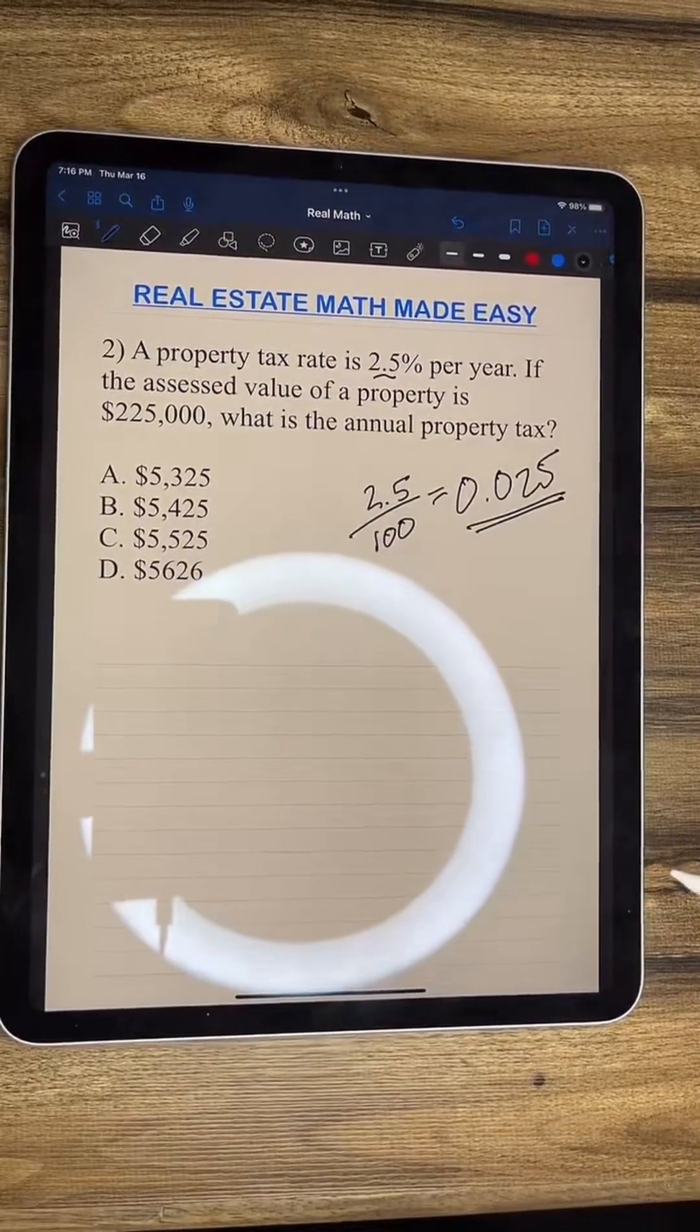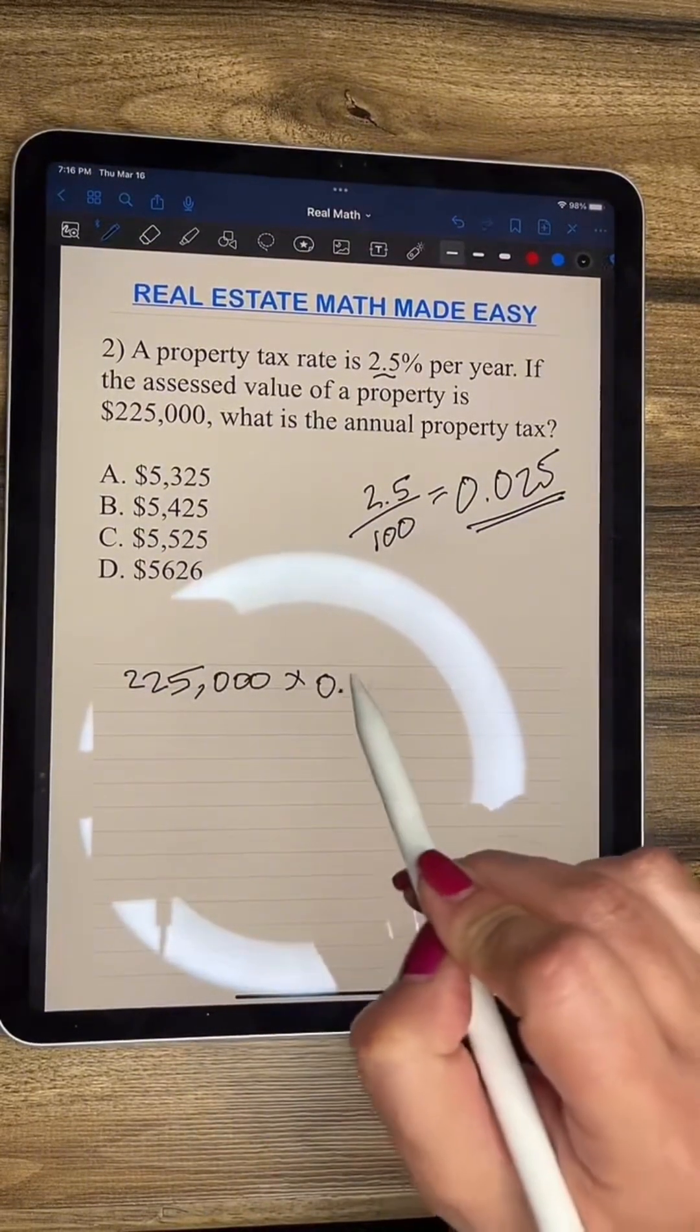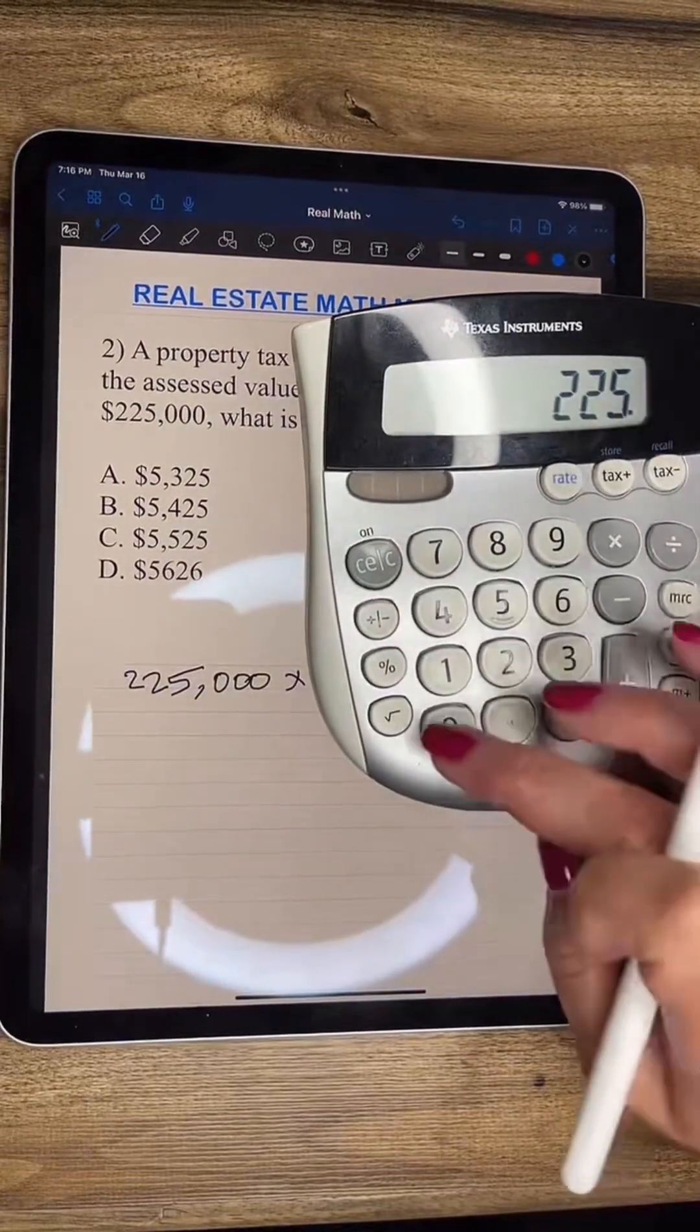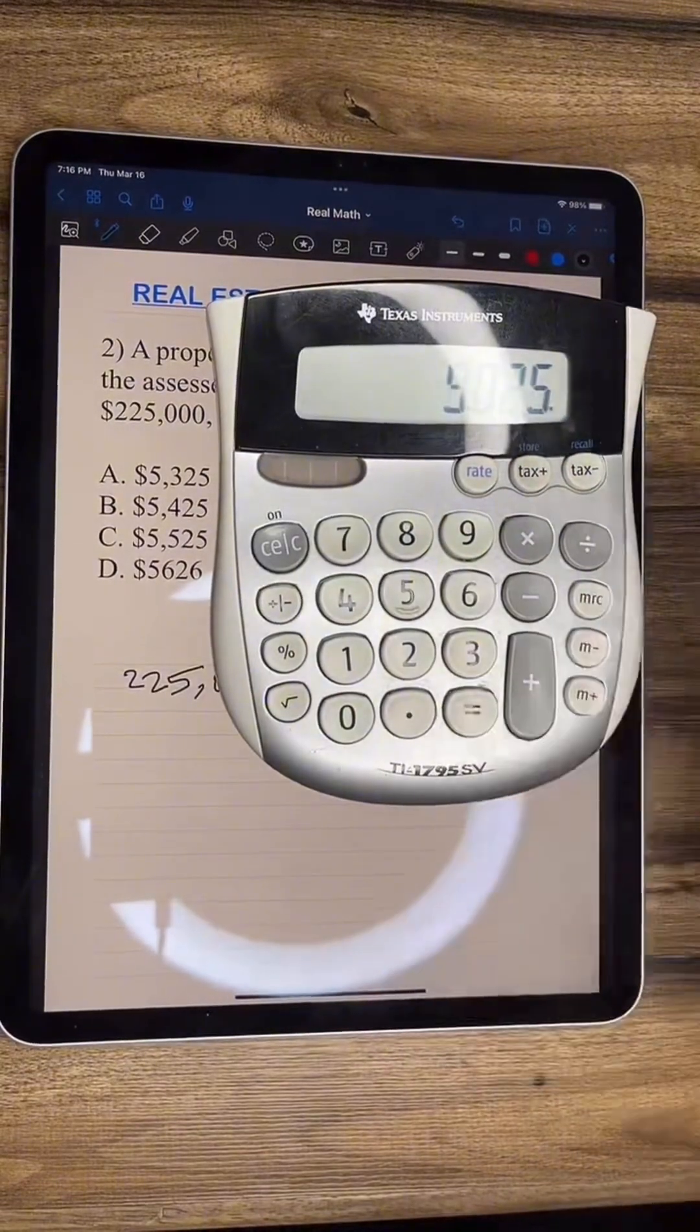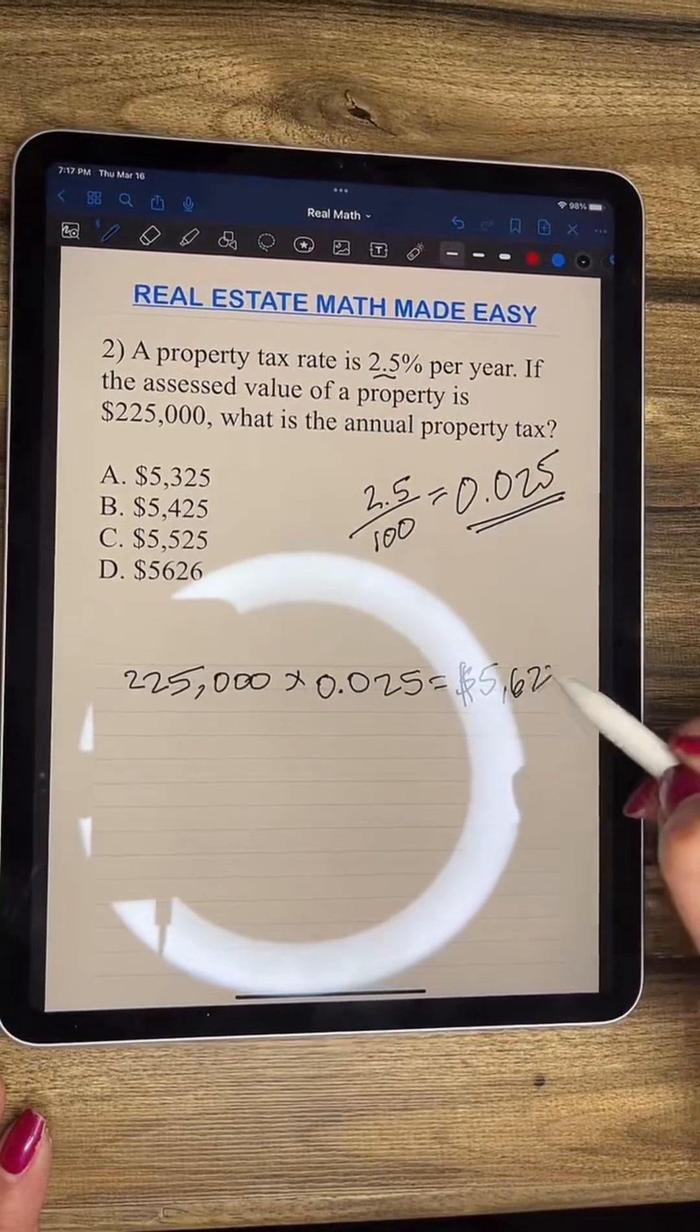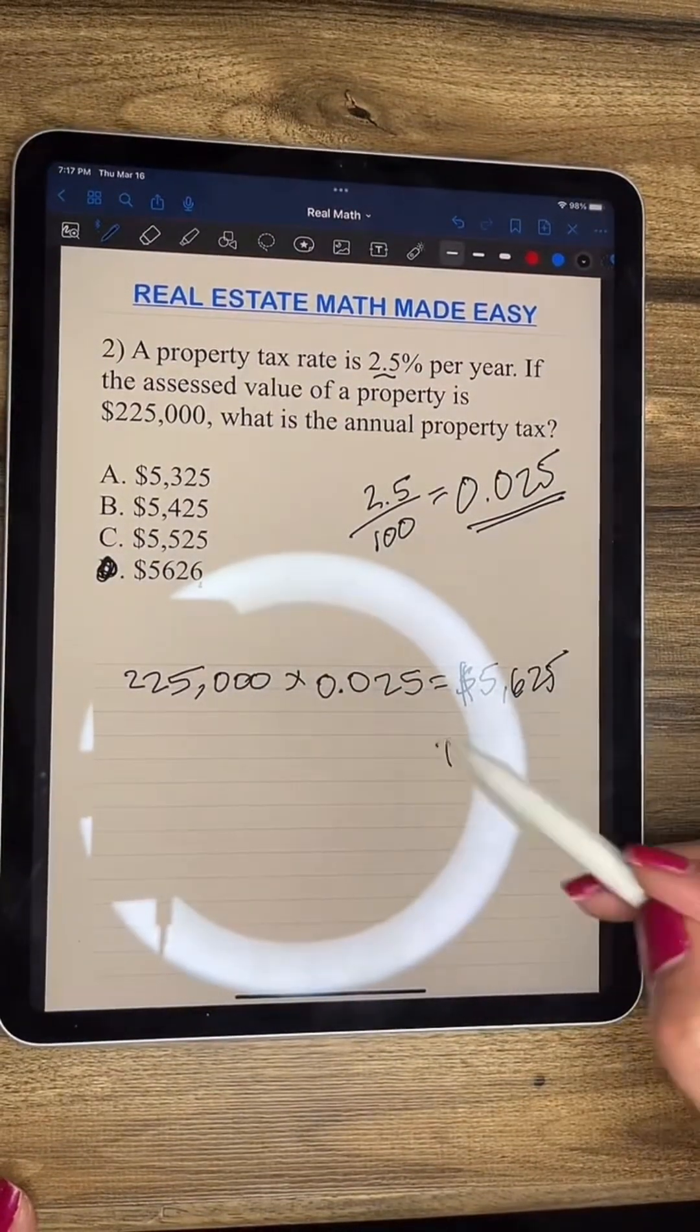So this is the number we're going to be working with now. So we have $225,000 times 0.025. So now what does that equal? We have $225,000 times 0.025 equals $5,625. So our answer has to be D.